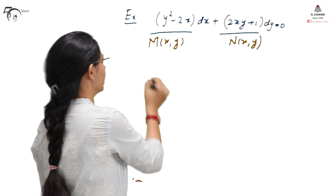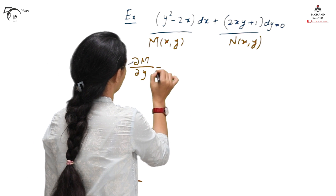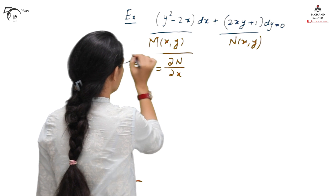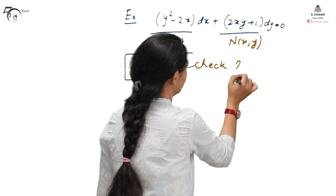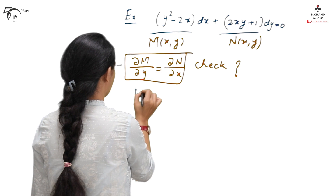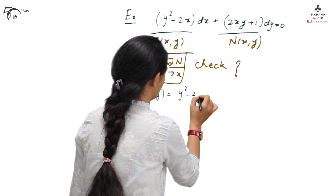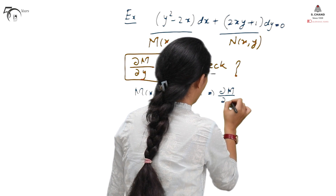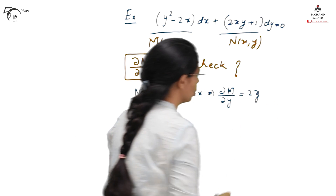We need to check whether they satisfy the exactness condition — that is, ∂M/∂y equals ∂N/∂x. Taking M(x,y) = y² − 2x and differentiating with respect to y, we get ∂M/∂y = 2y.